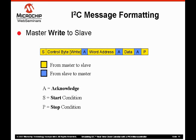Following the acknowledge, the master device then clocks out the word address that it intends to write. The word address points to one of the registers in the register map that we saw on the previous slide. Once the slave device receives the word address, it responds with an acknowledge. The master device can then send data to be written to that word address, and each data reception is acknowledged by the slave device. After each acknowledge, the word address internal to the I2C slave device is incremented to the next address, so additional data bytes will be written to successive addresses. The master ends the transmission by sending a stop condition.